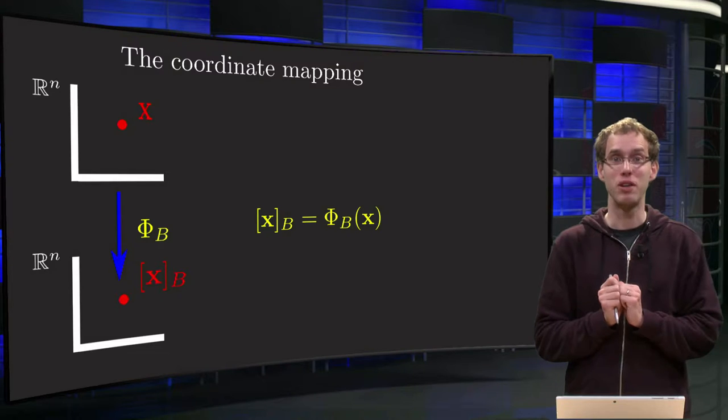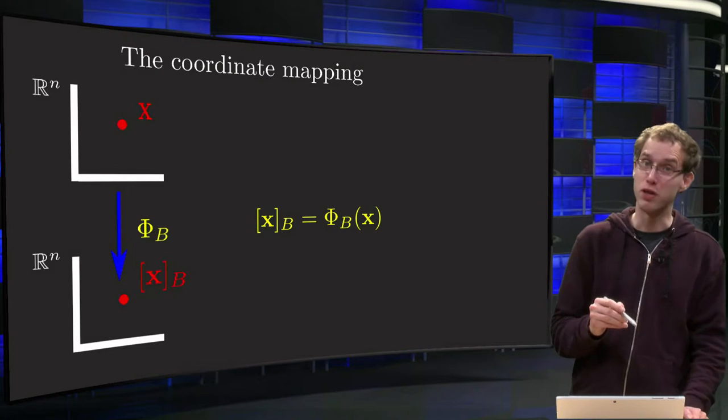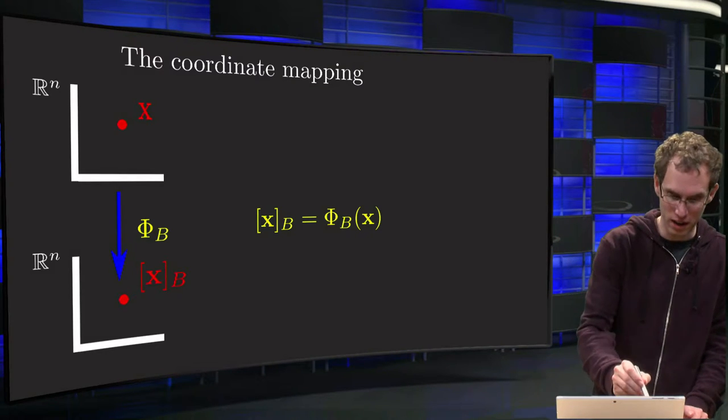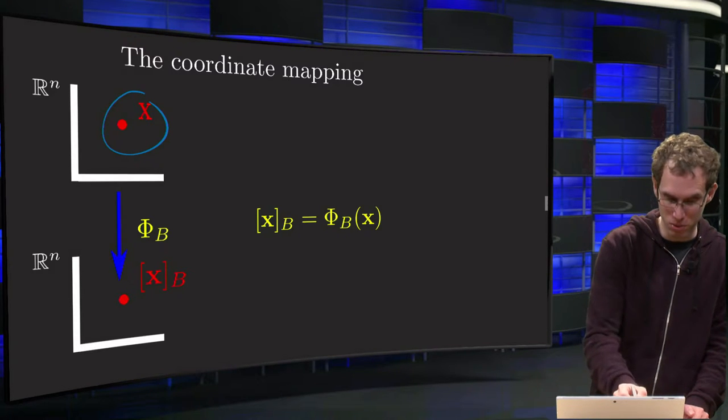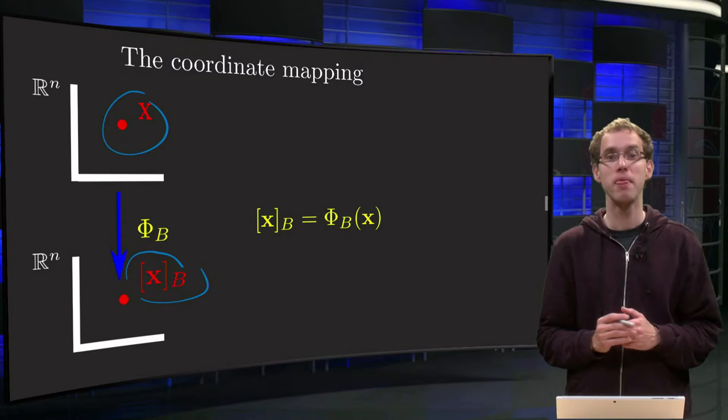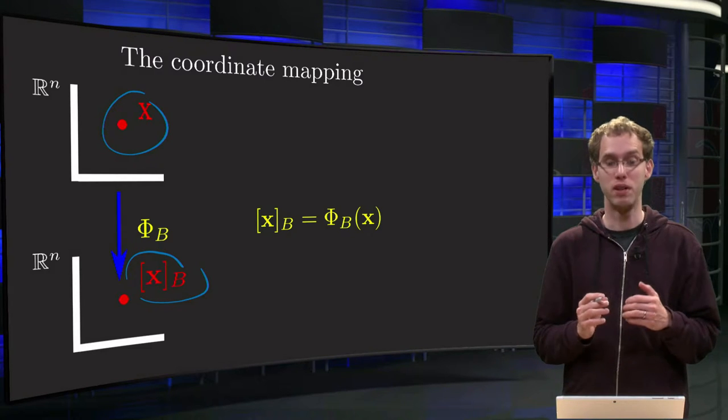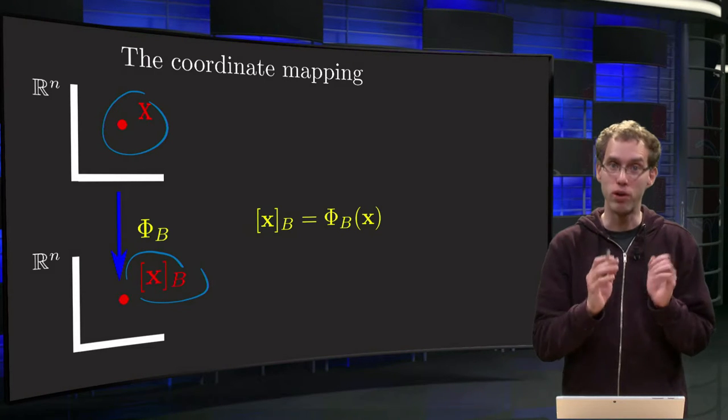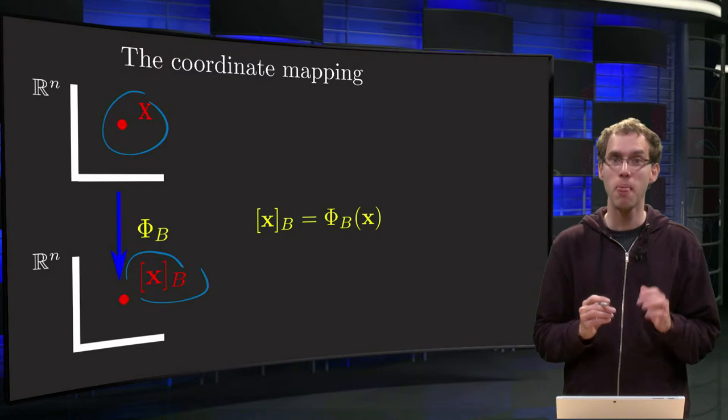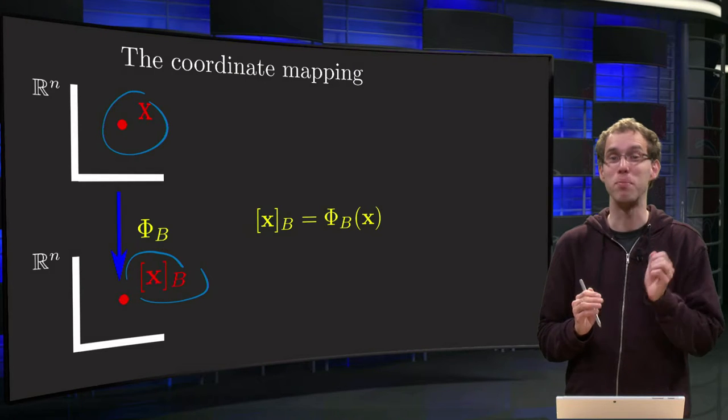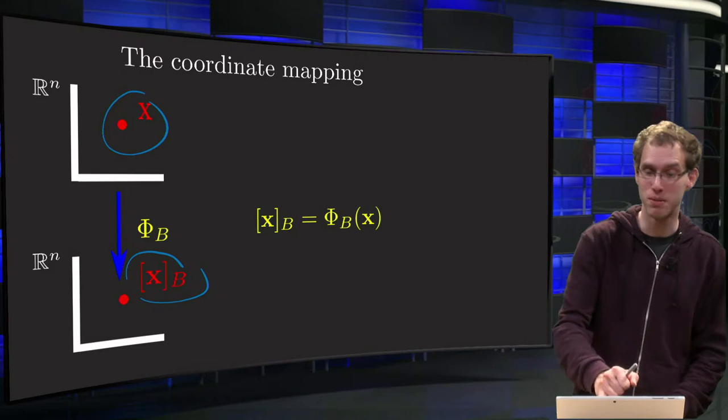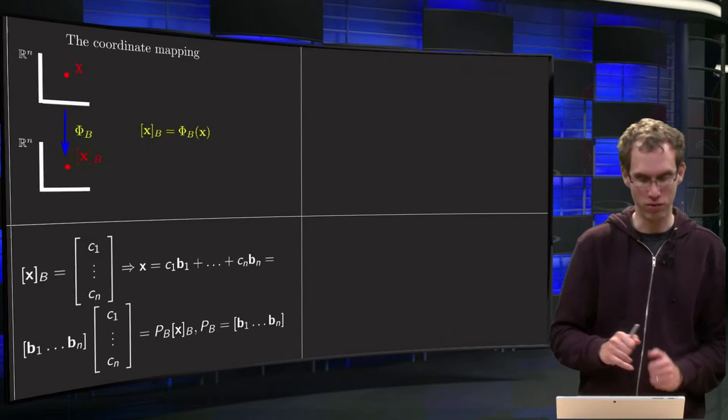First, we will take a look at the coordinate mappings. So if we start at Rn with some x, then we have a coordinate mapping to the coordinate vector xb by some phi b. And then we know that xb, the coordinate vector, is the image of phi b. Let's take a closer look at that one first because this coordinate mapping is now also implemented by a matrix. And how does that work?